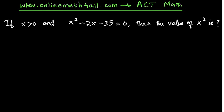Okay, let's look at the question that we have on the board. If x > 0 and x² - 2x - 35 = 0, then the value of x² is?